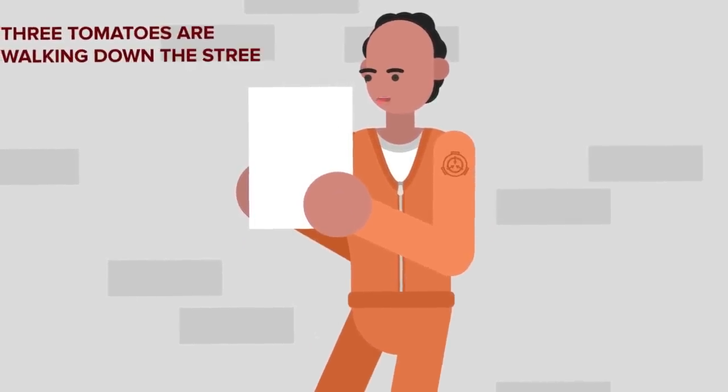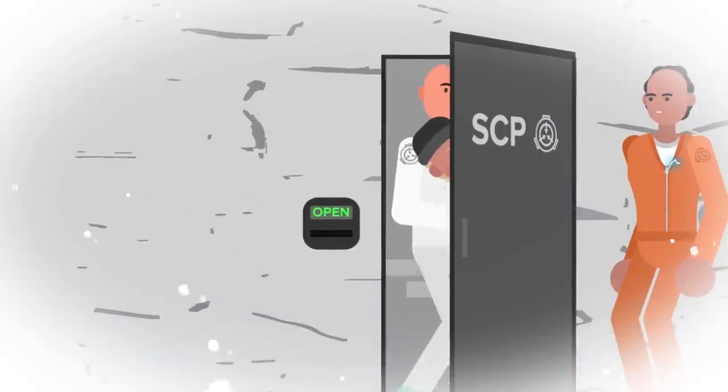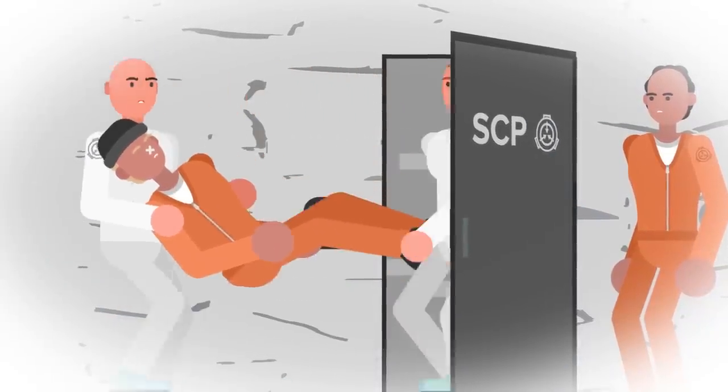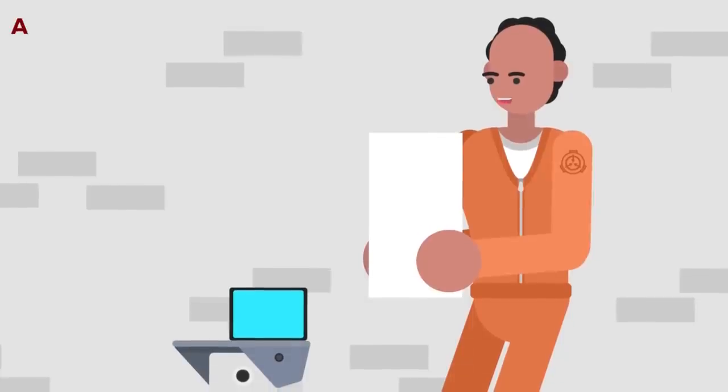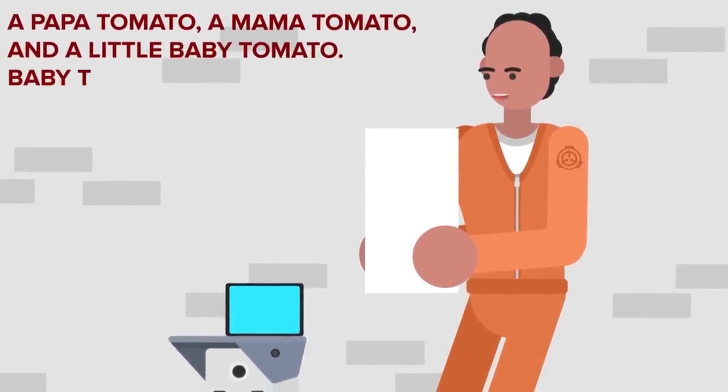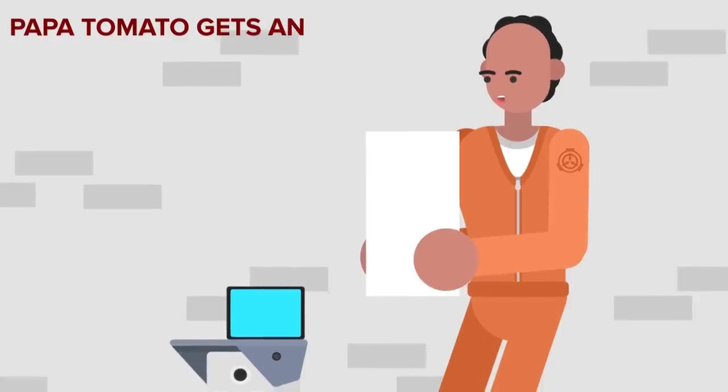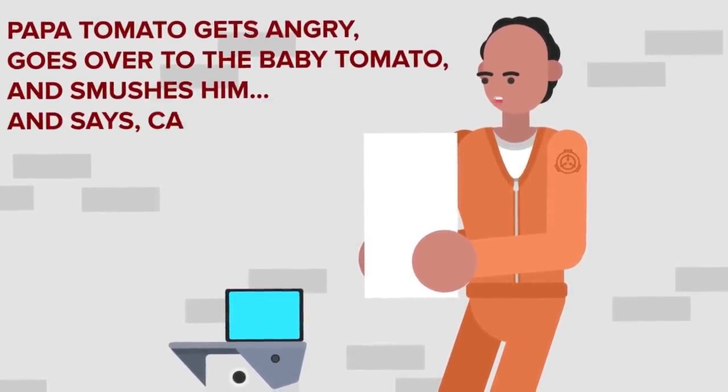Three tomatoes are walking down the street, D-5042 says with a little shake in his voice. He had seen D-5041 exit the room just before he entered, with blood and tomato paste running down his face. A papa tomato, a mama tomato, and a little baby tomato. The baby tomato starts lagging behind. Papa tomato gets very angry, goes over to the baby tomato and smushes him, and says, catch up.